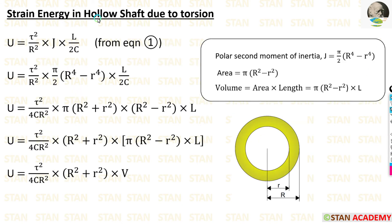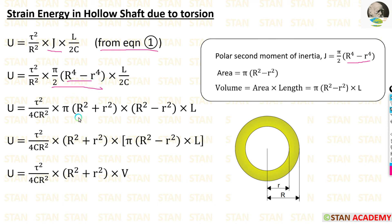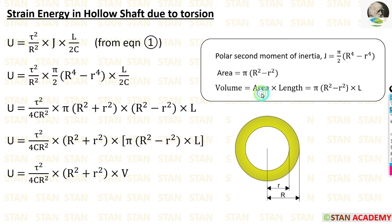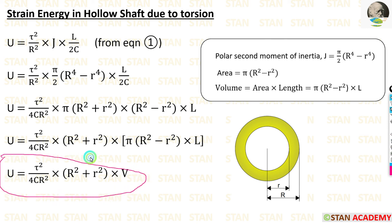Now we are going to find the strain energy formula in a hollow shaft due to torsion. Taking equation number 1, the polar second moment of inertia for the hollow shaft is phi by 2 into capital R to the power 4 minus small r to the power 4. Applying this instead of J, and using the difference of squares formula (a plus b into a minus b), where a is capital R squared and b is small r squared, we can separate phi·(R squared minus r squared) and l. The area formula for the hollow shaft is phi into capital R squared minus r squared, and the volume is area into length. So phi into capital R squared minus small r squared into l equals V. This gives the expression for the strain energy in a hollow shaft due to torsion.